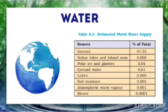Water is most abundant in oceans, at 97.3%. However, a very small amount of water is available for drinking purposes. Groundwater accounts for 0.61%, and lakes also hold a very small percentage. So while oceans are the largest source, the water there is mixed with salts, leaving very little available for drinking.